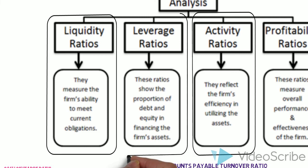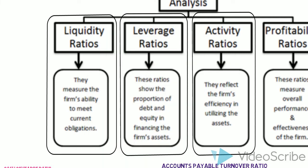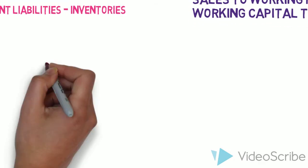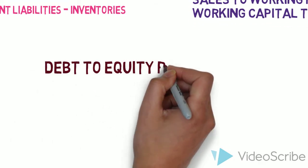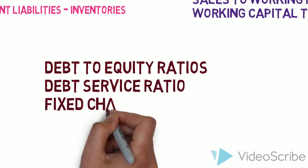Three: Leverage ratios. These ratios reveal the extent to which a company is relying upon debt to fund its operations and its ability to pay back the debt. These include: A - debt to equity ratios, B - debt service coverage ratio, C - fixed charge coverage ratio.